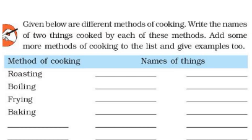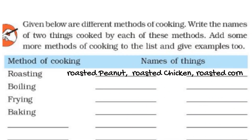Roasted items include roasted peanuts, roasted chicken, and roasted corn. Remember, roasting is a process done on high flame — when there is exposure to actual heating flames, it is roasting. It is dry roasting — there is no addition of water or sprinkling of water; it is done purely dry on high flame.